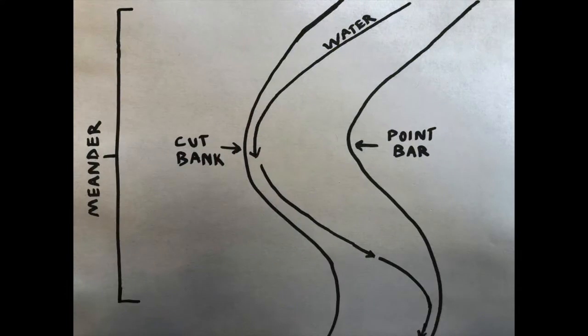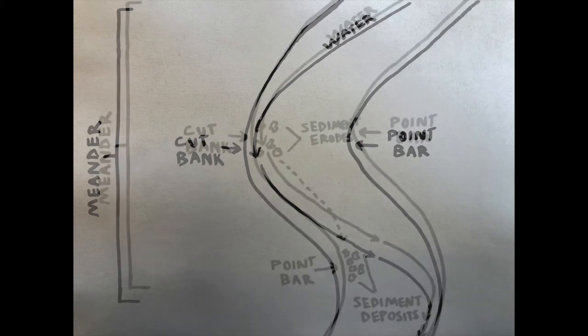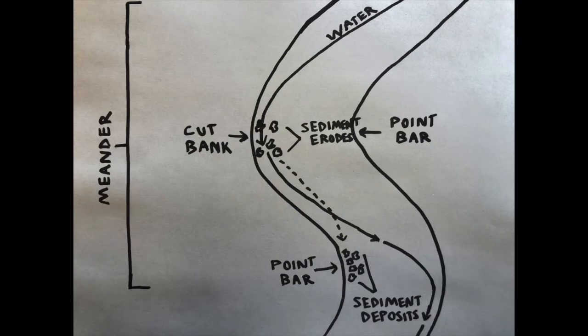Where point bars and cut banks relate to river erosion is in the fact that water is moving a lot faster on the cut bank outer edge than it is on the point bar inner edge. So what happens is that fast water passing by the cut bank actually erodes sediment off of the cut bank and then deposits it on the next point bar.